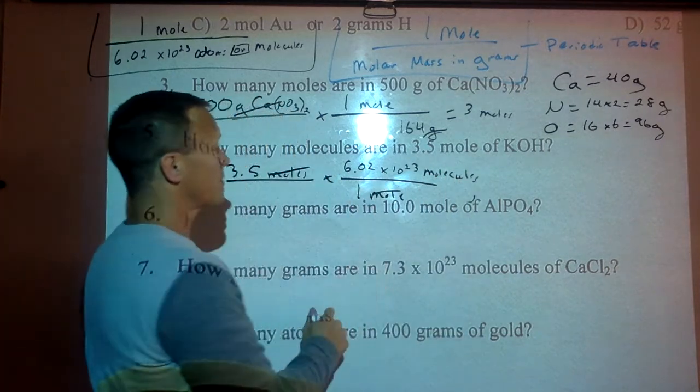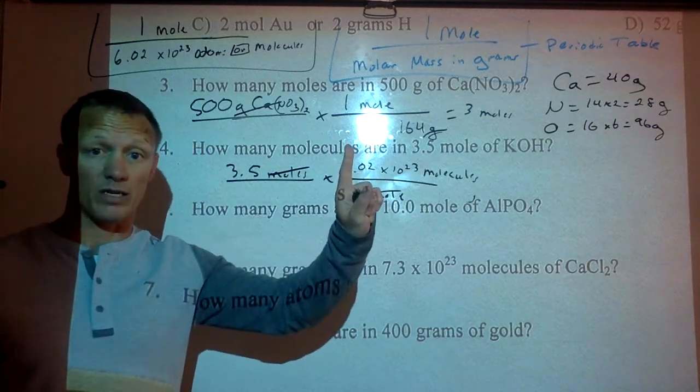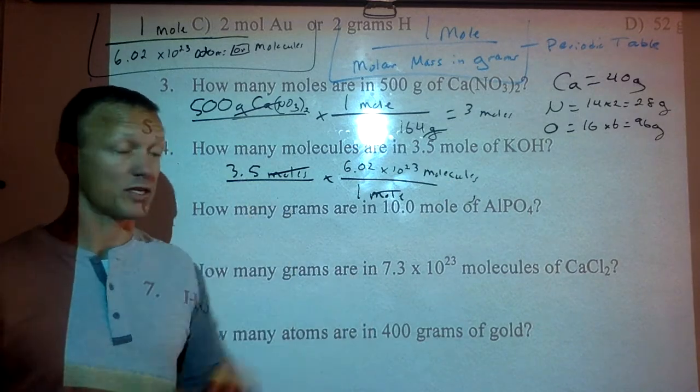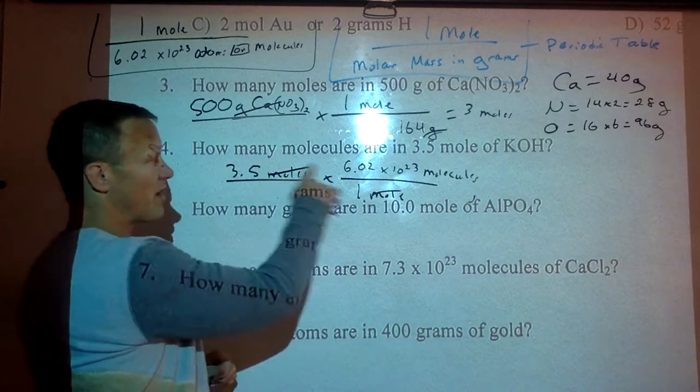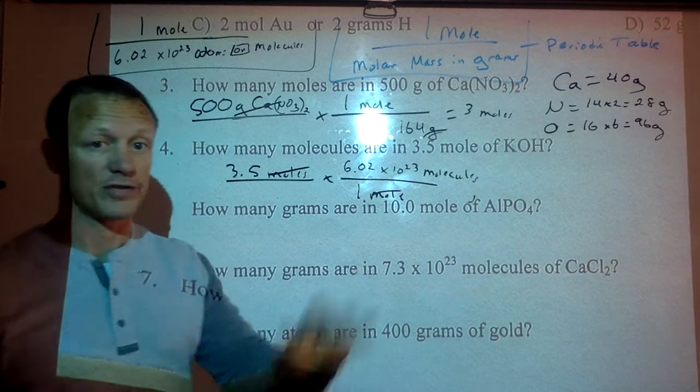Moles, moles cancel. It's asking for molecules, so I know I'm done. I know it's only a one-step problem because we started with moles. If you start with moles or finish with moles, it's a one-step problem. So I'm taking 3.5 times 6.02 times 10^23. I'll let you guys figure out that answer.